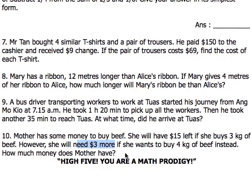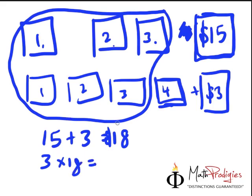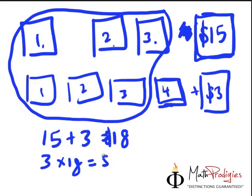The question is asking: how much money does mother have? So if one kilogram is $18, we can find the amount of money she has. For the first 3 kilograms, it's simply 3 times $18. That will give me the cost of the 3 kilograms she bought, which means she would have used up $54 buying the first 3 kilograms of beef.